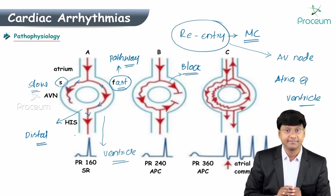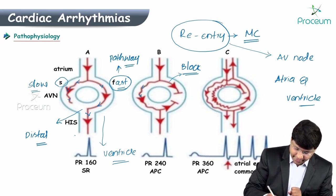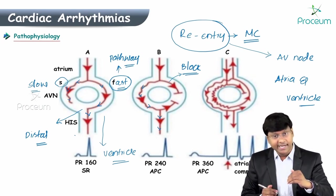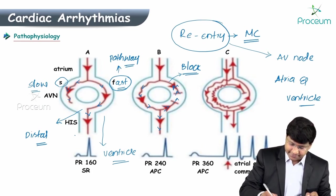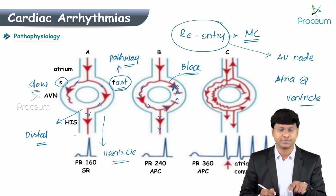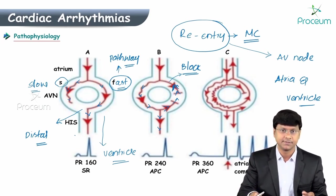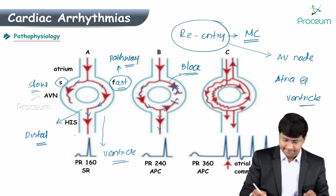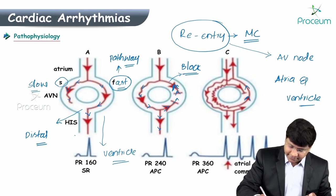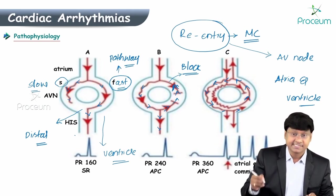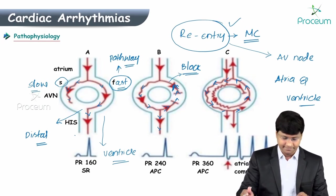In the re-entry phenomenon, there is a block within the fast pathway. As a result, the slow pathway slowly reaches the ventricle and not only enters the ventricle but also moves back into the fast pathway — because the fast pathway is blocked. The slow pathway thus takes over the fast pathway.